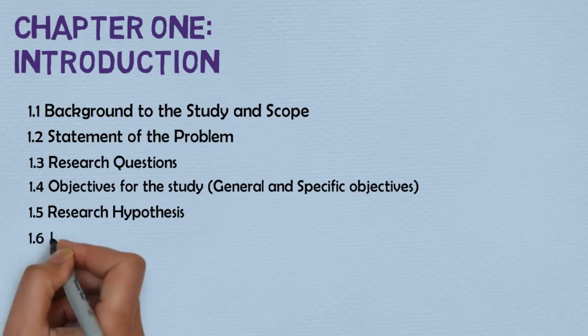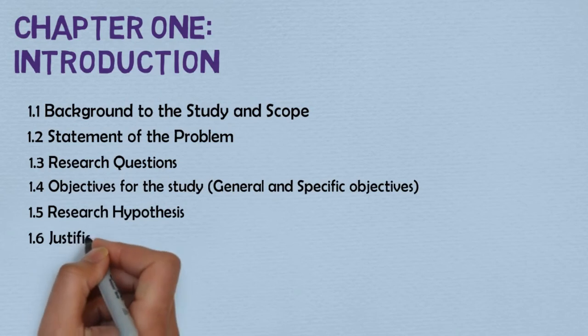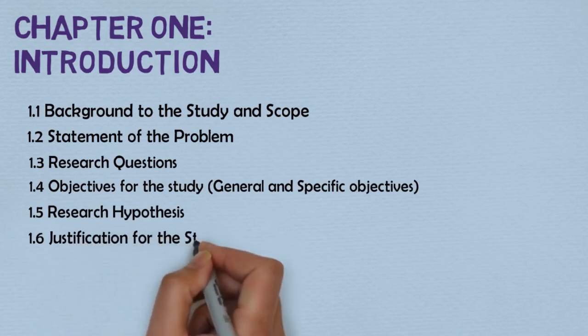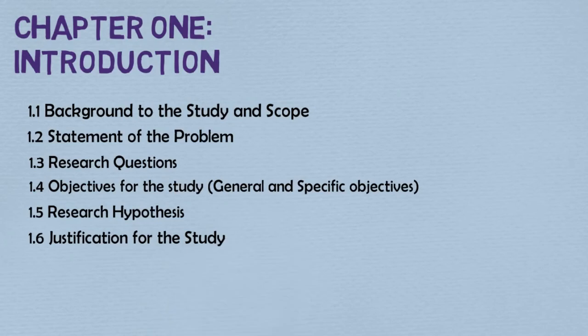Finally, under the introduction section, we have the justification for the study. The last part of chapter one is the justification for undertaking the study. Two important considerations are done here. First, establish the rationale. What is the reason for the study? How big and important is the reason for carrying out this study? For this, just one paragraph is enough.